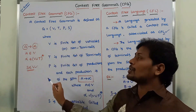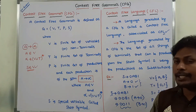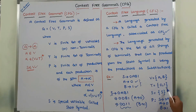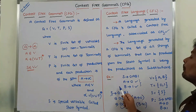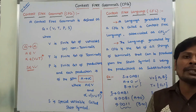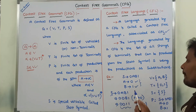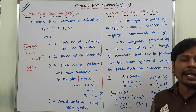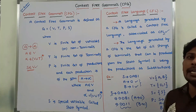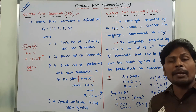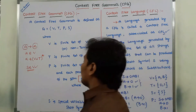This is the formal definition of context-free grammar, the definition of context-free language, and an example of context-free grammar. In a context-free grammar, the left-hand side compulsorily contains a single non-terminal or single variable. The right-hand side may contain a combination of terminals and non-terminals including epsilon. Thank you one and all for watching this video.